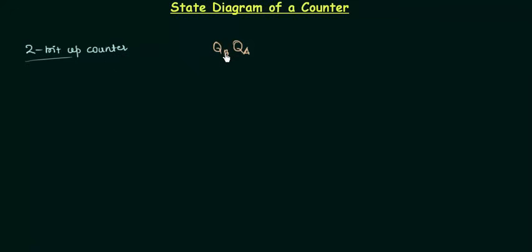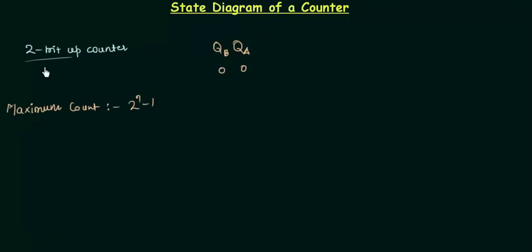As it is an up counter it will start counting from 0 and end counting at the maximum count. The maximum count for a 2-bit up counter can be found by the formula 2 to the power n minus 1, where n is the number of bits or flip flops being used. So the maximum count is 2 to the power 2 minus 1, which is 4 minus 1, giving us 3. The binary equivalent of 3 is 1 1.